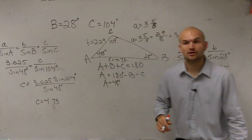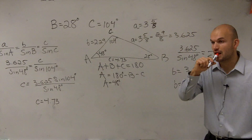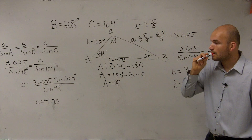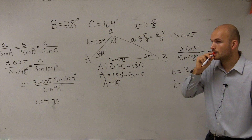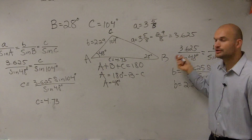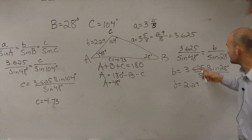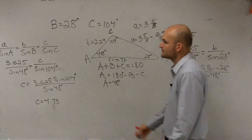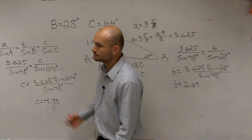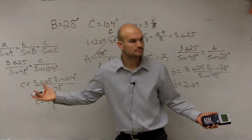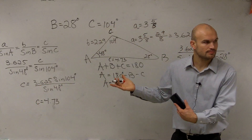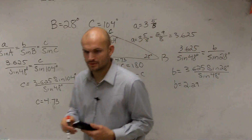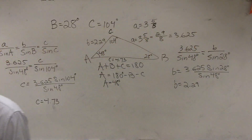And there you go — now I've found all the missing sides. It wouldn't matter which ratio you used for C; you could have used B or A. It doesn't matter. That's it — that's all you guys have to do.